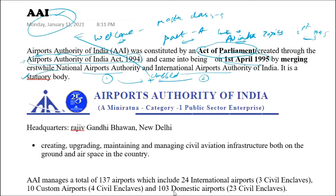That is how Airports Authority of India came into existence. It is a statutory body - this is also important. AAI is a Mini Ratna and a Category One public sector enterprise.